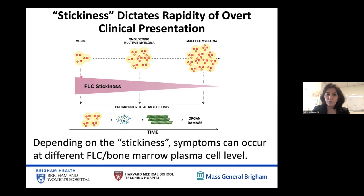If this sequence is very sticky, it will deposit very rapidly, and patients will progress into systemic amyloidosis from a stage previously recognized as MGUS. As the free light chain stickiness decreases, patients may instead develop symptoms when they have full-blown active multiple myeloma, because deposition occurs in a manner proportional to the stickiness of the free light chain sequence.